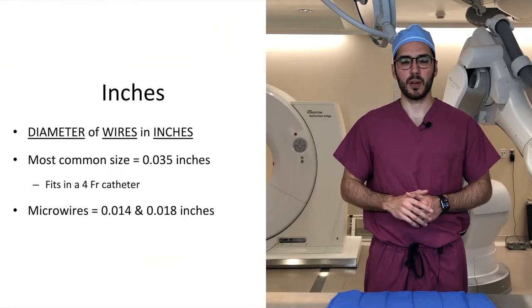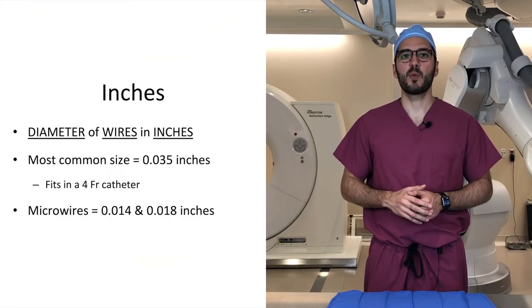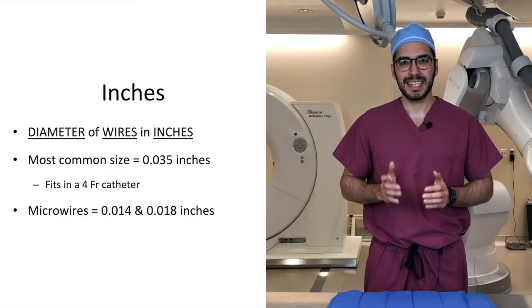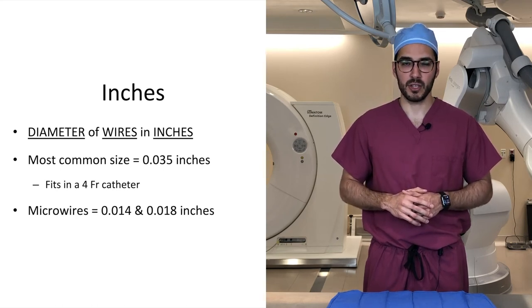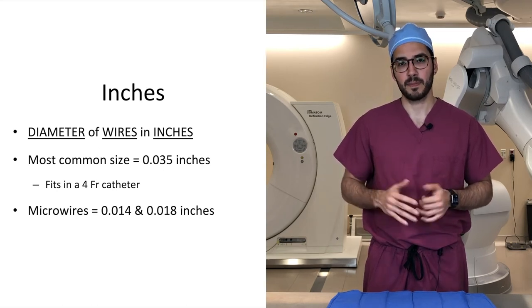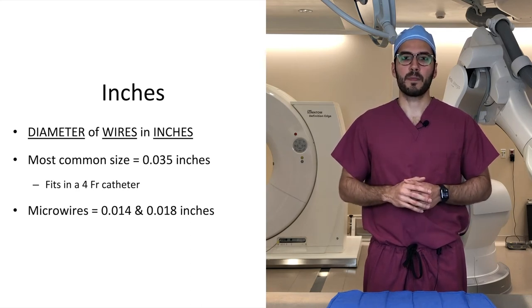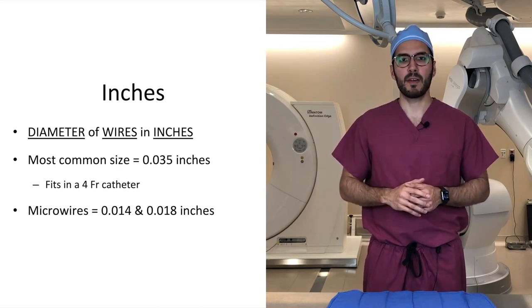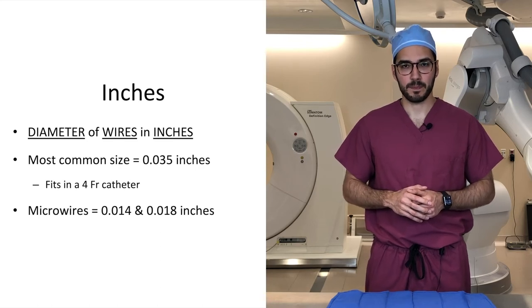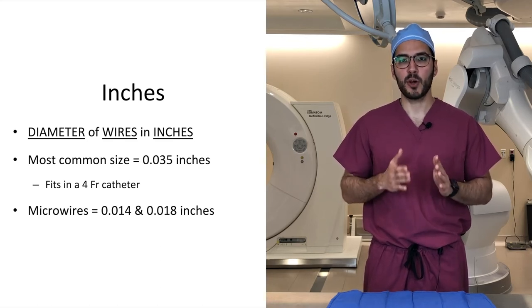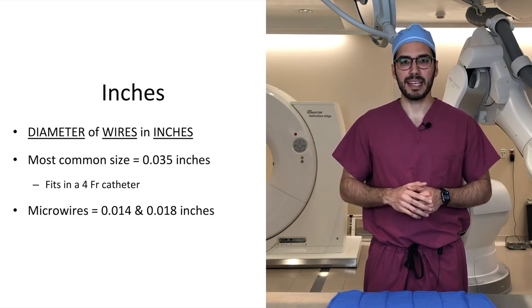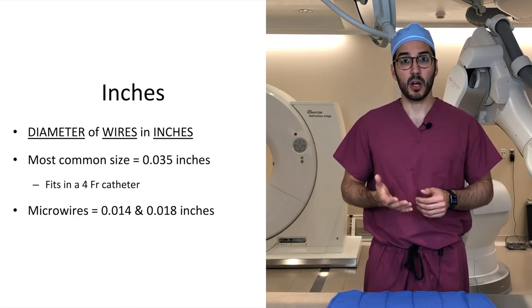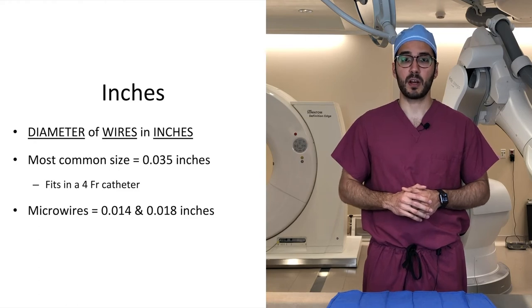Next is inches. Inches describes the outer diameter of wires, and they come in one hundredths of an inch. A standard sized wire is 0.035 inches, and a good rule to remember is a 0.035 wire will fit in a 4 French catheter. 0.018 and 0.014 are known as micro-wires, and they are found in the micro-access kit along with the 21-gauge needle we talked about earlier.